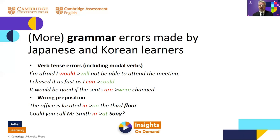Wrong preposition is also an issue. For example: 'the office is located on the third floor' or 'how would you call Mr. Smith at Sony.' Notice that the preposition here is not related to the preceding verb, but is actually part of a prepositional phrase associated with the following noun. These prepositional phrase errors are quite common, and we'll come back to that a little bit later.